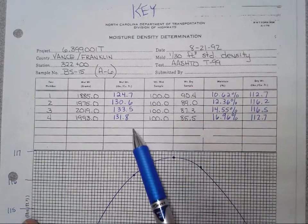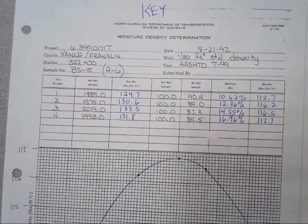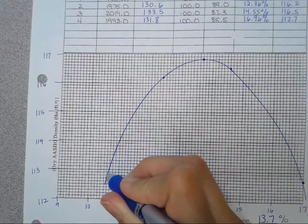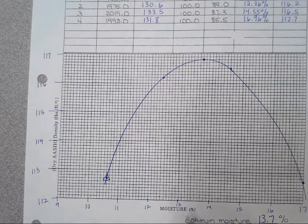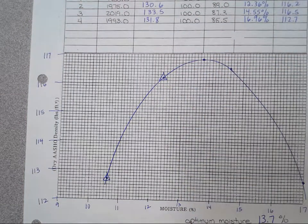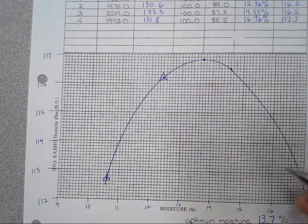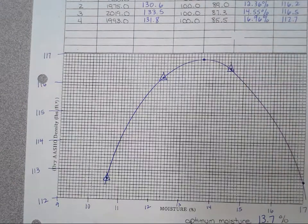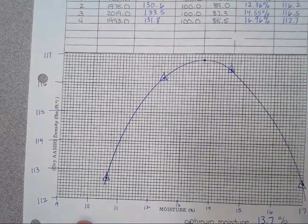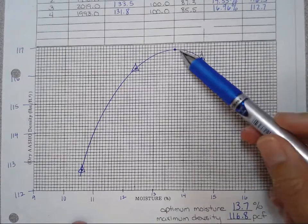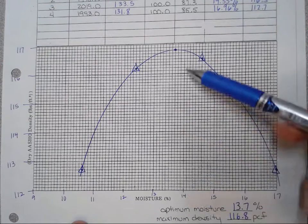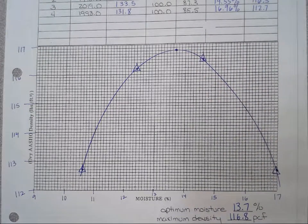And then let's take a look at the last one, for 15. Again, I'm going to plot these two together. So I've got my 10.62 and 112.7. It's going to be right in here. 12.36 and 116.2 right up here. 14.55 and 116.5 right in here. And 16.96 and 112.7 over here. So for me, when I connected up those points and found my optimum point up here, I got around 13.7% and 116.8 pounds per cubic foot.